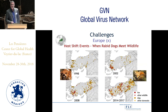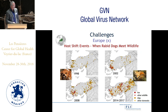Host shift events even occur in Europe, but here it is not bats but dogs — as an example from Turkey illustrates. Because the Turkish authorities were unable to eliminate the remaining foci of dog-mediated rabies, the virus spilled over into foxes, got established, and then spread all over the country. They actually created a new problem.